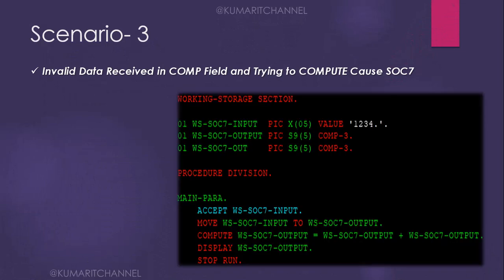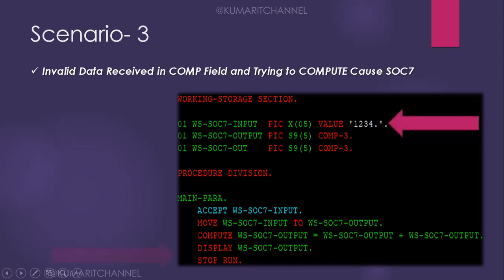Scenario 3: invalid data received in a COMP field and trying to compute. You have an alphanumeric value initialized with some data and you move it into a numeric variable — that move itself is fine. But when you try to compute with that value, the program cannot understand it and throws a SOC 7 exception error. This is one of the most commonly seen scenarios.